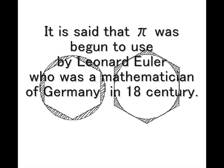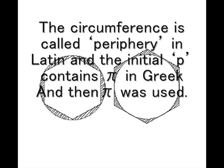It is said that pi was begun to be used by Leonhard Euler, who was a mathematician of Germany in the 18th century. The circumference is called periphery in Latin, and the initial 'p' contains pi in Greek, and so pi was used.